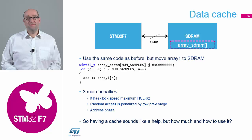SDRAM has three main penalties. First, it's connected on the FMC, the external memory bus, which runs at half the clock speed — so you've already gone from 216 MHz down to 108 MHz for the SDRAM clock. Then you also have the row pre-charge time and cycles inside the SDRAM chip, and the address phase.